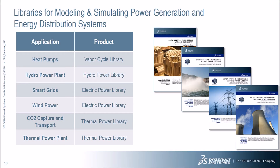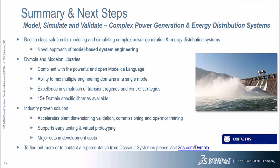This table provides a list of products relevant for system simulations in the energy industry. The solutions presented in this webinar are covered by four libraries: the Vapor Cycle Library, Hydropower Library, Electric Power Library, and Thermal Power Library. The simulations are performed using Daimla, a systems engineering simulation tool belonging to the Catia family. Daimla combined with the Modelon libraries is a best-in-class solution for model-based systems engineering of power generation and energy distribution systems. Based on the powerful and open Modelica language, these solutions allow for multi-domain simulations across a range of engineering disciplines.